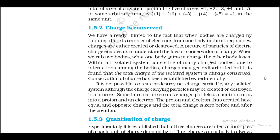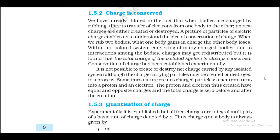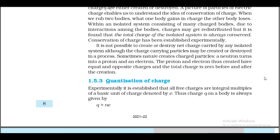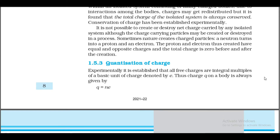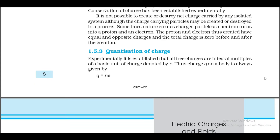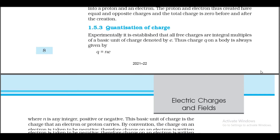It is not possible to create or destroy net charge carried by any isolated system, although the charge-carrying particles may be created or destroyed in a process. Sometimes nature creates charged particles: a neutron turns into a proton and an electron. The proton and electron thus created have equal and opposite charges, and the total charge is zero before and after the creation.